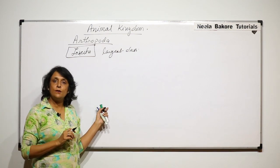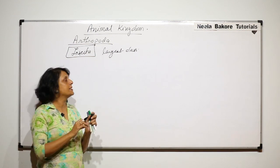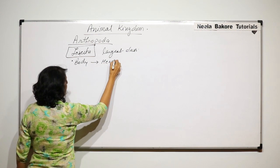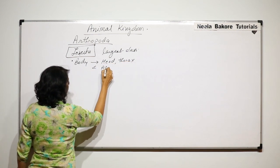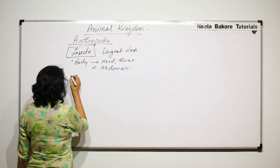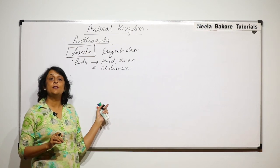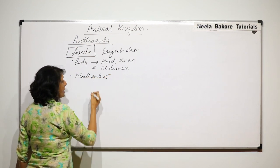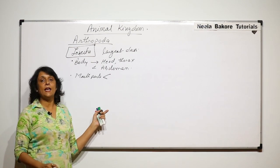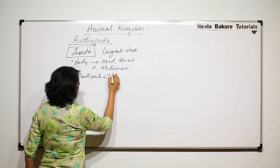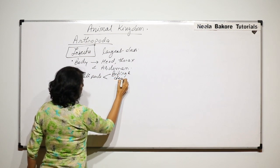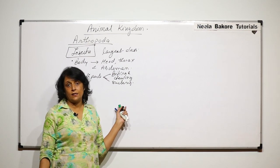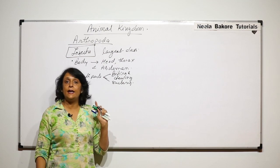There are some general characteristic features we will first discuss, and then we will take certain examples. In Insecta, the body is divided into head, thorax, and abdomen. Mouth parts are of different types depending upon the feeding habits — they can be biting and chewing type, or piercing and sucking type. The type of food these insects feed on determines the type of mouth parts they have.